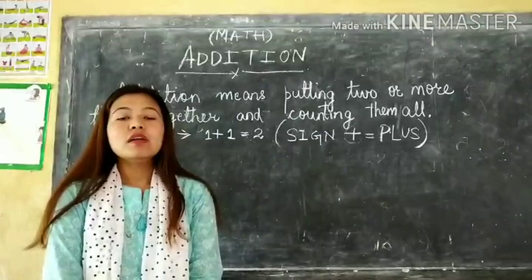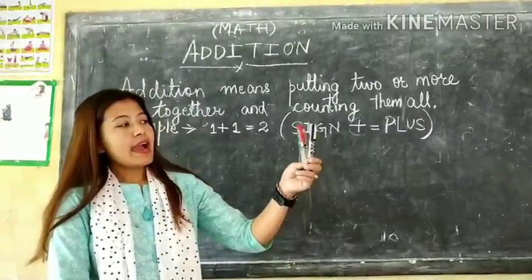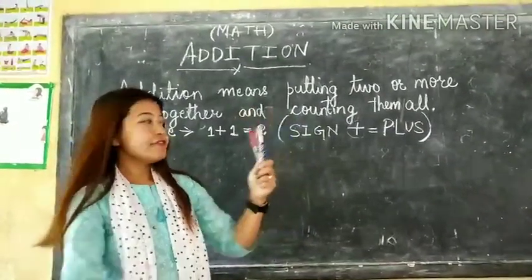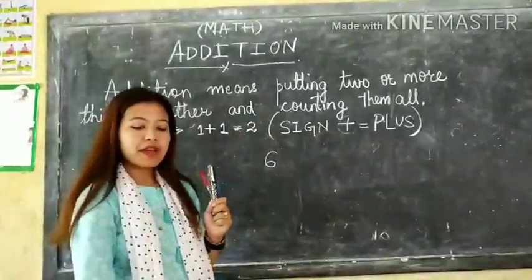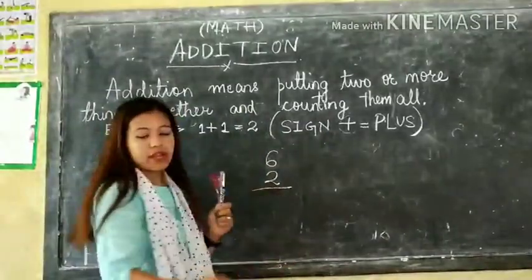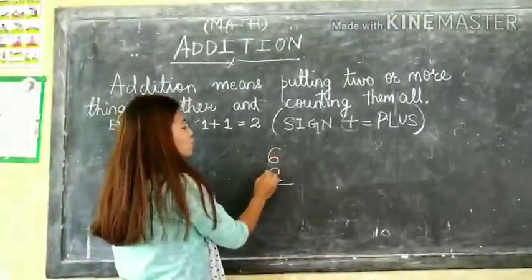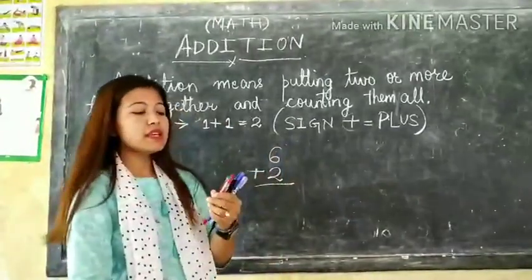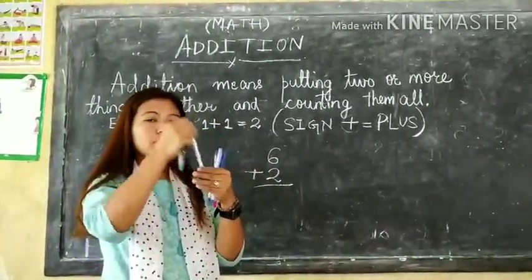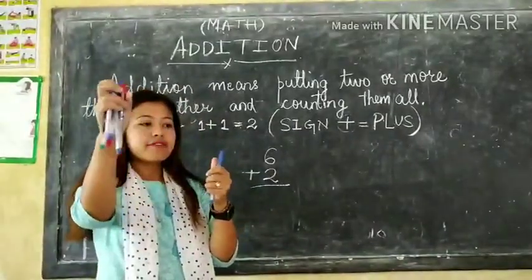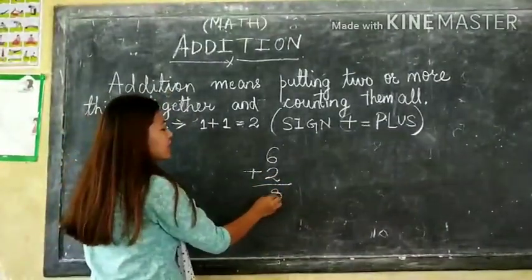Now let me make you more clear about the term addition. See here, I have 6 pens in my right hand, and 2 pens in my left hand. When I put these pens all together, we will be getting the sum of these 2 numbers. Let me count: 1, 2, 3, 4, 5, 6, 7, 8. So 6 plus 2 is 8.